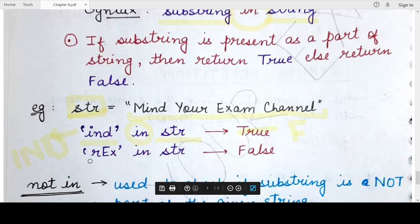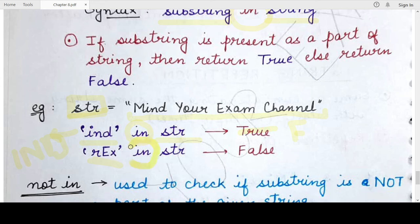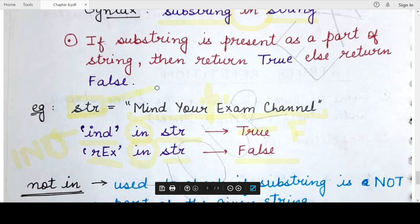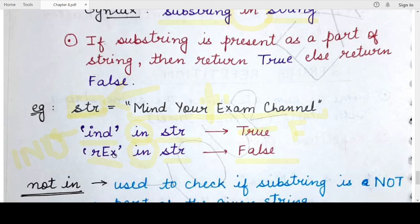Now let's take another example. I want to check whether the string `rEx` (small r, capital E, x) is part of the string `str`. As you can see, `r`, `E`, and `x` do belong to the string `str`, but they are separated by a space character. Since a space is also a valid Unicode character, the return value would be `False` — because there is no part of `str` that contains the characters `rEx` in continuation.